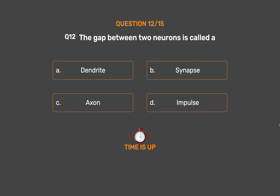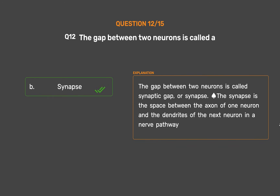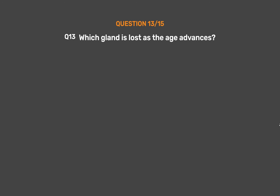The correct answer is Option B, Synapse. The gap between two neurons is called a synaptic gap or synapse. The synapse is the space between the axon of one neuron and the dendrites of the next neuron in a nerve pathway.